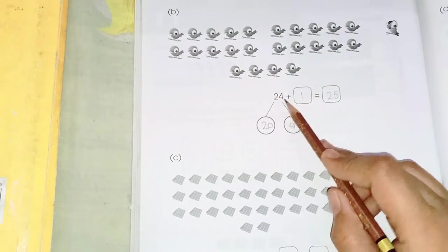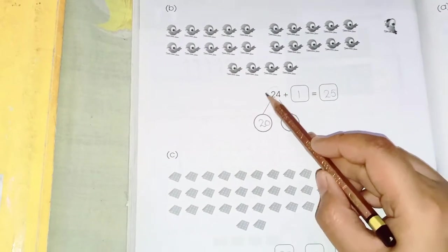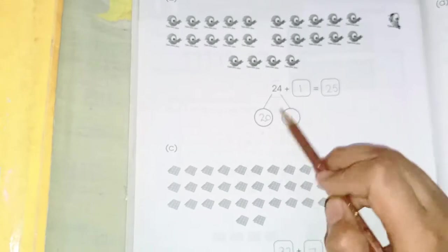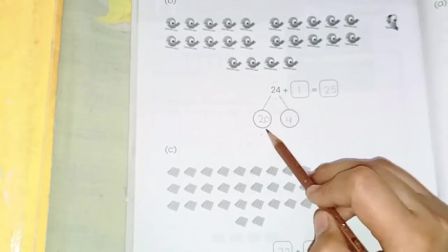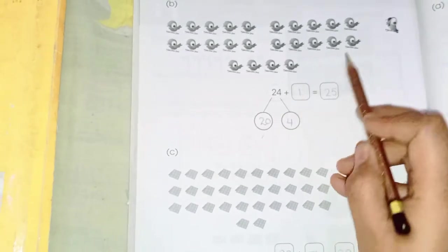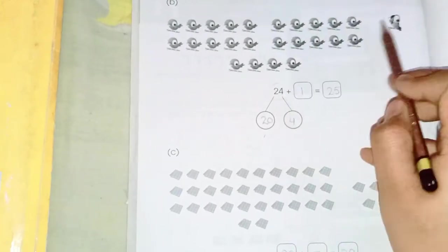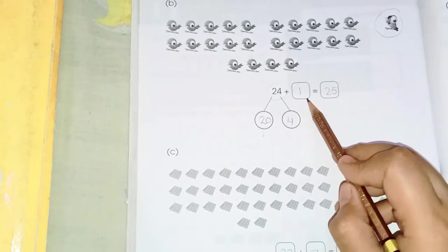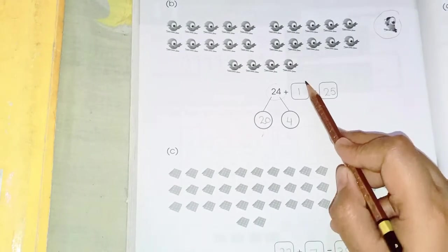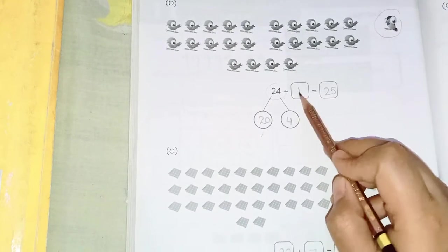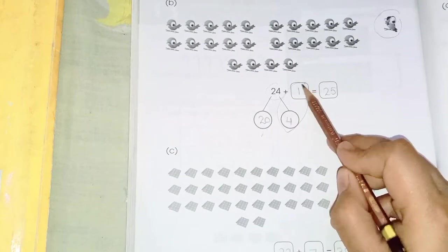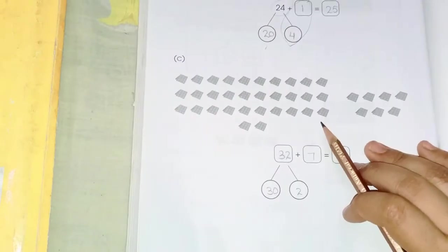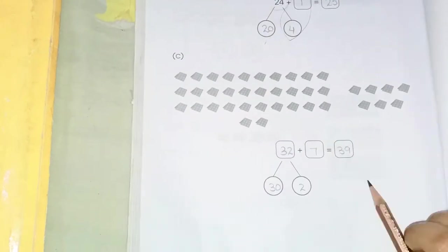Page number 188. Again we separate into tens and ones: 20 and 4. We can see one parrot is here, so we have 24. Then 4 plus 1 is 5, and 5 plus 20 is 25.